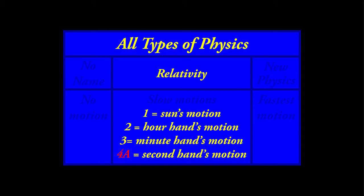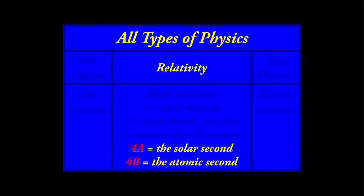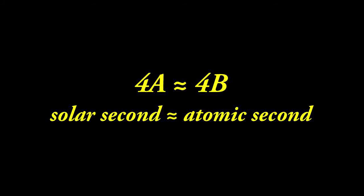The solar second is labeled 4A and the atomic second is labeled 4B. Scientists defined the atomic second to be time — that is our present definition, and that is our present problem. There is a very slight fractional difference between a solar second and an atomic second, but these two motions are almost identical. Even though an atomic second is extremely precise and much more consistent than a solar second, these two motions are almost identical.